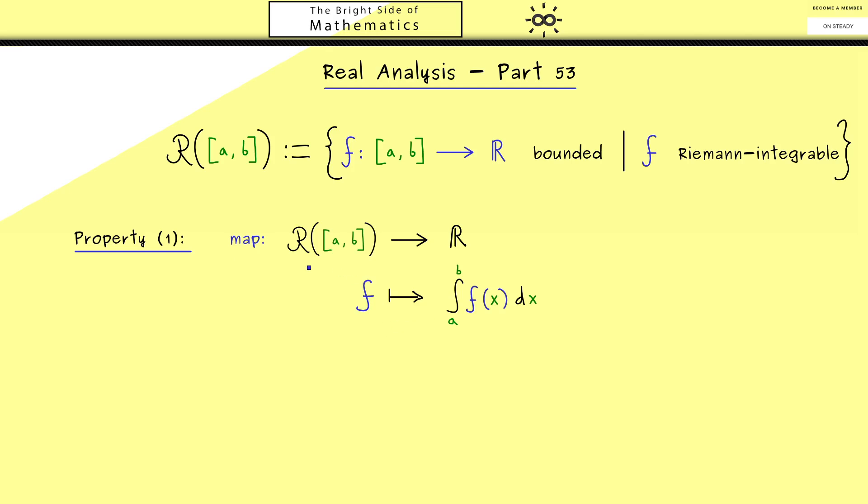More concretely, this means that we look at the map that takes a function as an input and the output is given by its integral, which is by definition a well-defined real number. And then the important property here is that this map is linear and monotonic. More precisely, linear means for the integral that we can pull out the addition and scalar multiplications. And monotonic just means if we have two functions where one of them is always larger than the other one, then also the integral of this one is larger than the other one.